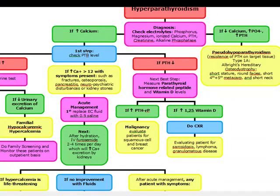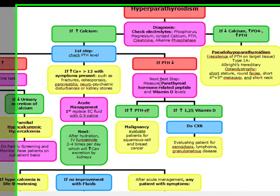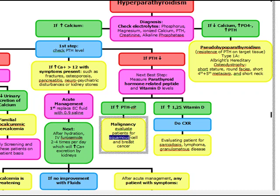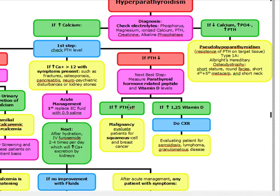If after we check the PTH level the patient is asymptomatic and the PTH level is decreased, we want to check parathyroid hormone-related peptide and vitamin D levels. If there's an increase in parathyroid hormone-related peptide — which is not the same thing as PTH — it's going to indicate a malignancy. We're going to evaluate the patient for squamous cell carcinoma and breast cancer, most commonly squamous cell carcinoma of the lung, which ectopically secretes PTH-related peptide.